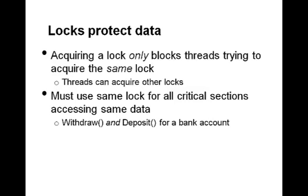The thing to remember is that you have to use the same lock for two critical sections that access the same data. You might have different functions that access the same data — such as a withdraw function and a deposit function for a bank account — that use the same lock. This is important because while we're doing a withdraw, we don't want anyone to do a deposit and modify the bank balance. However, a function that prints the hours the bank is open doesn't need to use that same lock, because it's accessing different data — not the bank account balance.